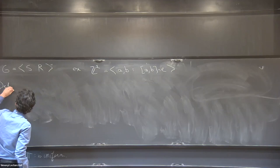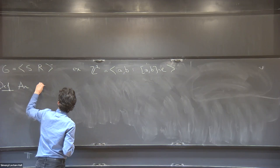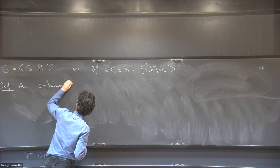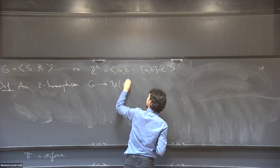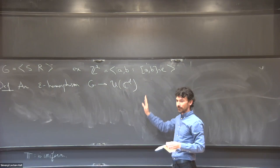I'm going to define a notion of epsilon-homomorphism — an approximate notion of being a homomorphism. An epsilon-homomorphism from G to unitaries in dimension D is a function defined on the generators such that it approximately respects the relations used to present the group. Specifically, the average over relations of the norm squared of phi(R) minus the identity — using the dimension-normalized Frobenius norm — should be at most epsilon.